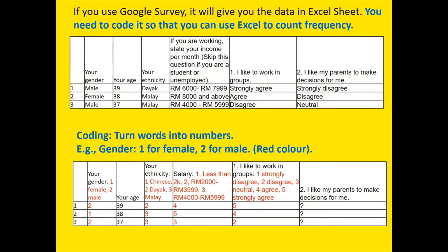How do we code the data? We turn words into numbers. Put the codes into the first row so you remember. For gender, follow alphabetical order: 1 = female, 2 = male. For ethnicity: 1 = Chinese, 2 = Dayak, 3 = Malay. For salary: 1 = less than $2,000, 2 = $2,000–$3,999, 3 = $4,000–$5,999, and so on up to $8,000 and above. For item 1, 'I like to work in groups': 1 = strongly disagree, 2 = disagree, 3 = neutral, 4 = agree, 5 = strongly agree.